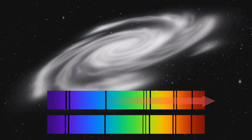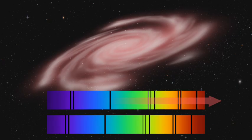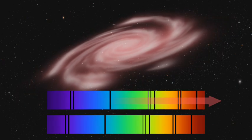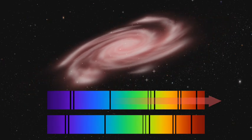If the galaxy was moving away from an observer on the Earth, the spectral lines would shift to the red end of the spectrum. This is known as a red shift.